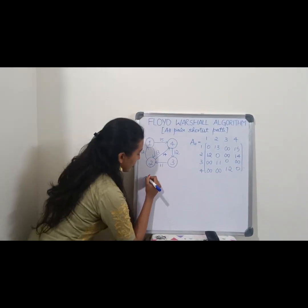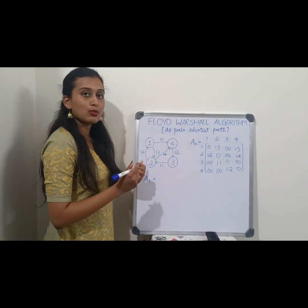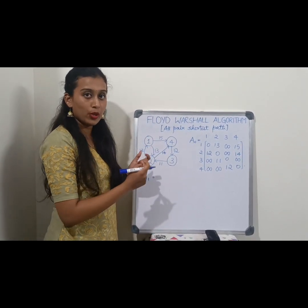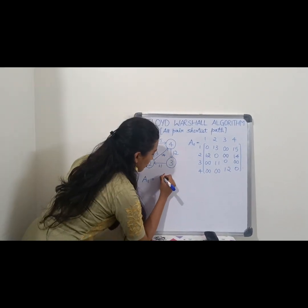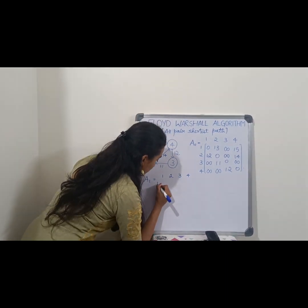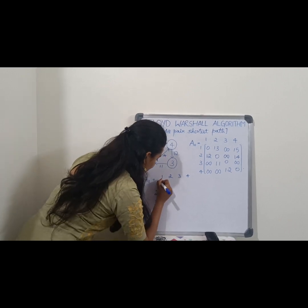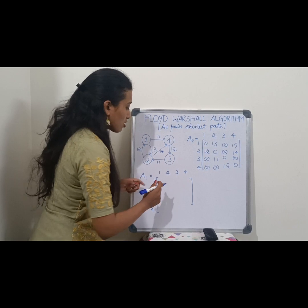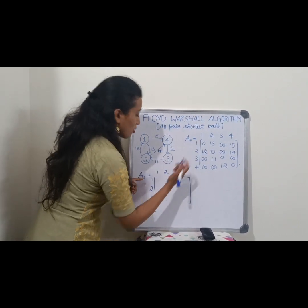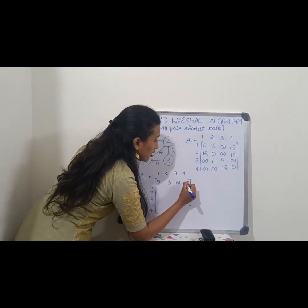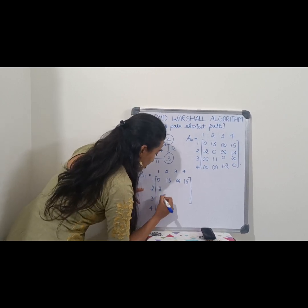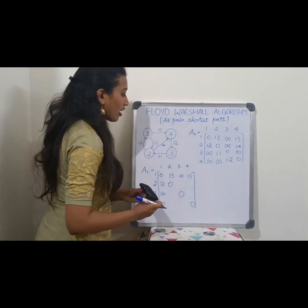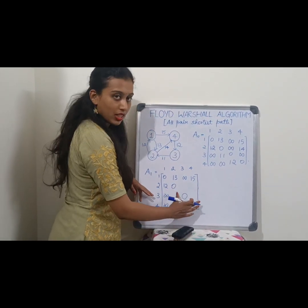Using this distance matrix we are constructing matrix A1. We consider vertex 1 as the middle element. The paths belonging to vertex 1 remain unchanged. The first row is 0, 13, infinity, and 15. The first column is 0, 12, infinity, and infinity. The diagonals are 0.